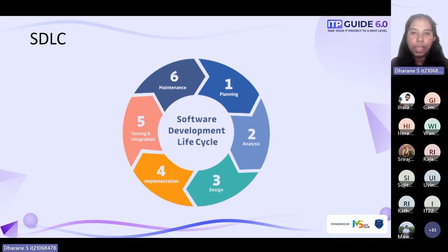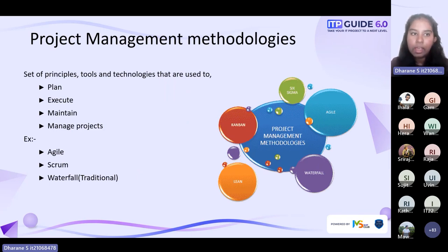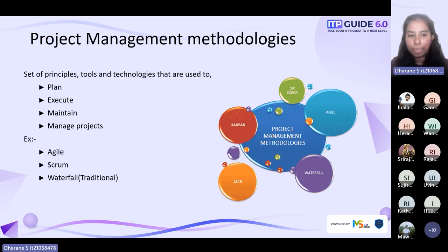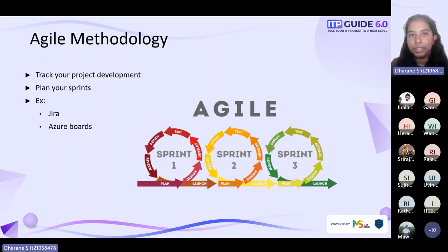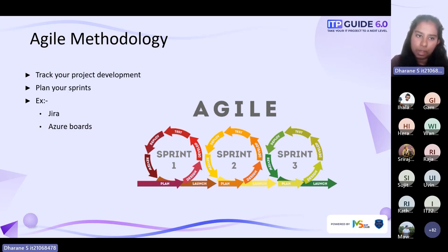Another thing you can use is project management methodologies — these are sets of principles, tools, and techniques you can use to plan, execute, maintain, and manage your projects. Agile, Scrum, and Waterfall are some examples. Looking at Agile methodology, it is a project management approach you can use to track your project. You should plan your sprints first, and in each sprint, define the time limit and the work to be performed. You can use Jira and Azure Boards as Agile tools.